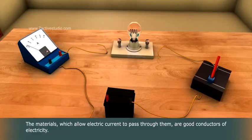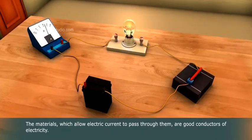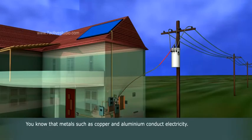The materials which allow electric current to pass through them are good conductors of electricity. On the other hand, materials which do not allow electric current to pass through them easily are poor conductors of electricity.